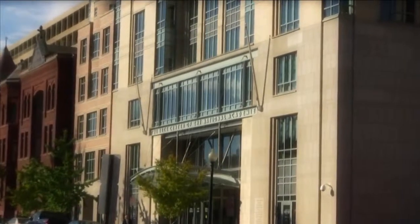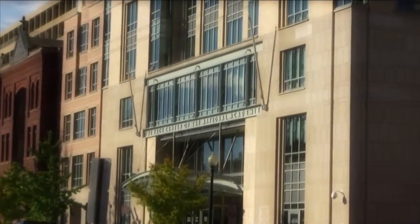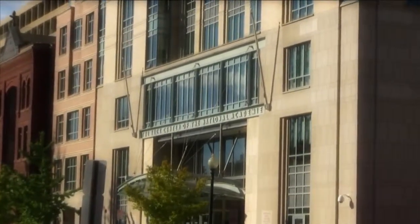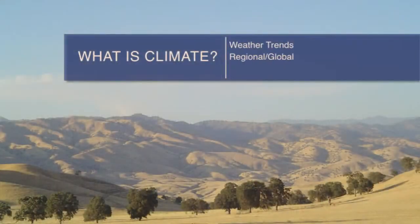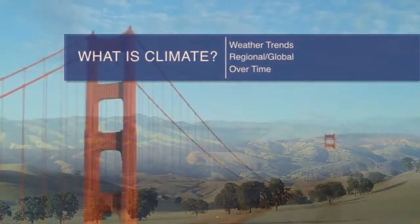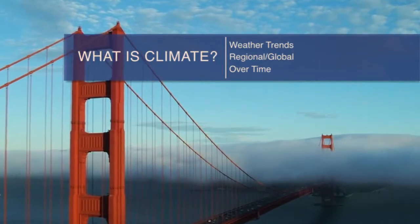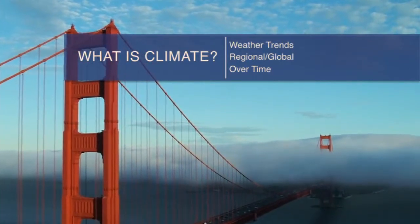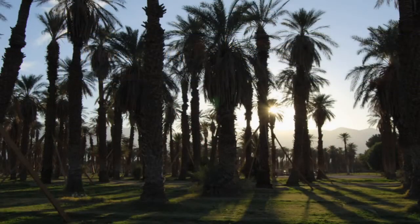The National Academy of Sciences has produced this video to help summarize what is known about climate change. Climate is commonly thought of as the average weather conditions at a given location or region over time. People understand climate in many familiar ways.